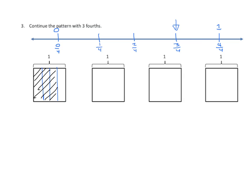We have three out of four parts shaded. Now we're going to partition it using my red marker — one horizontal line. We now have the fraction 3 fourths partitioned into more parts, so it's 3 times 2 over 4 times 2, and we have 6 eighths. If we look at that, we have 8 partitions in all and 6 of them are shaded. Therefore, 6 eighths is equivalent to 3 fourths.